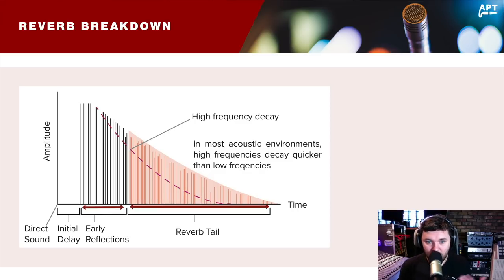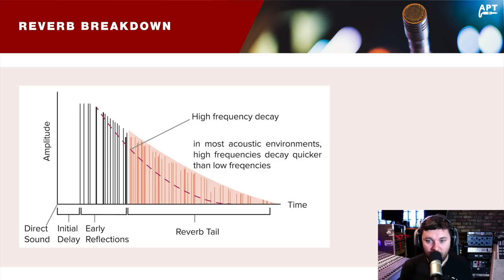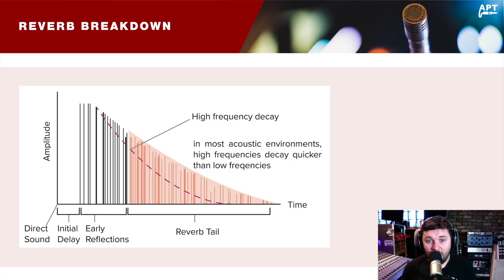When I'm conceptualizing reverb, I think about: what early reflection properties do I want, and what reverb tail properties do I want? I'll usually create two or three different reverbs that I blend to create the perfect acoustic property. This doesn't have to sound like a real space — on most contemporary pop recordings, the sense of space on a lead vocal is larger than life, better than you could achieve in the real world. They record vocals in very dry spaces and then artificially wet them after the fact. Let's go into Pro Tools and look at how I'd set reverb on a lead vocal.